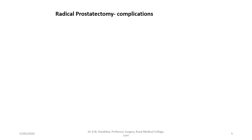The first radical prostatectomy was performed by Hugh Hampton in 1904, and Millen first described the radical retropubic approach in 1945. This procedure remained unpopular because of the frequent complications of incontinence and impotence. After 1980, with improved understanding of pelvic pathology and improved surgical technique, radical prostatectomy regained its place as a curative treatment. Laparoscopic and robotic approaches have further reduced complication rates, though these techniques are costly and available at only select centers.